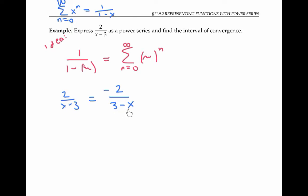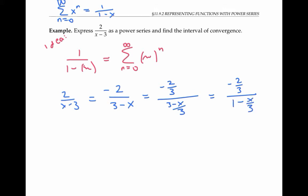I still don't like the three minus x — I wish it were one minus x. To make that happen, I divide everything by three, both top and bottom. This gives me negative two thirds divided by three minus x over three, which I can write as negative two thirds times one over one minus x over three.